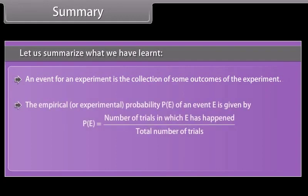The empirical or experimental probability P(E) of an event E is given by P(E) equals number of trials in which E has happened upon total number of trials. The sum of all the probabilities is 1.